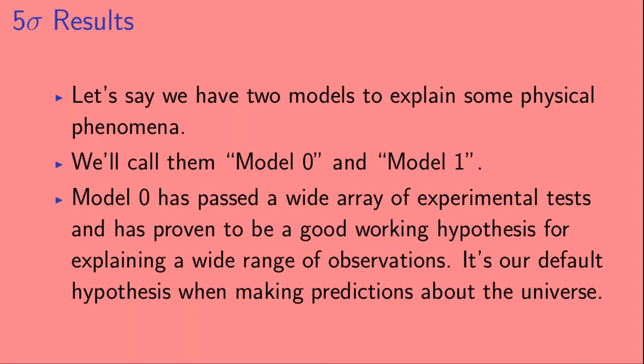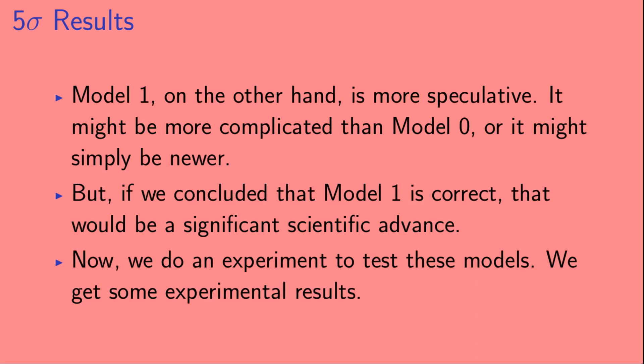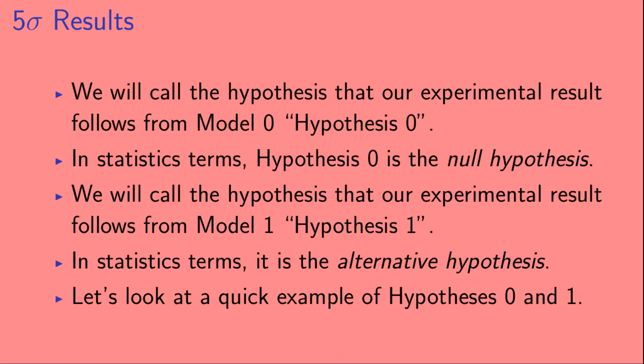Let's say we have two models to explain some physical phenomena. We'll call them model 0 and model 1. Model 0 has passed a wide array of experimental tests, and has proven to be a good working hypothesis for explaining a wide range of observations. It's our default hypothesis when making predictions about the universe. Model 1, on the other hand, is more speculative. It might be more complicated than model 0, or it might simply be newer. But, if we concluded that model 1 is correct, that would be a significant scientific advance. Now we do an experiment to test these models. We get some experimental results.